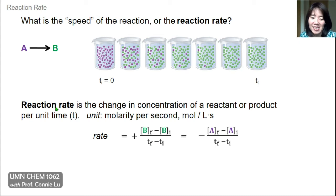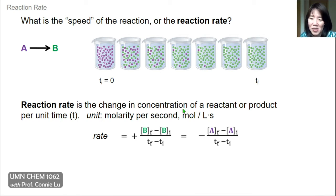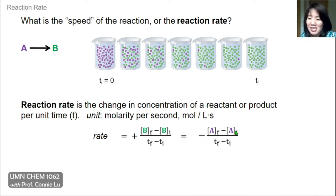Reaction rate is defined as the change in concentration of a reactant or product per unit time. Typically, chemical reactions are quite fast, so usually the unit time is seconds, and concentration has units of moles per liter. So the rate of this reaction can be written as the final concentration of product B minus its initial concentration over the total time — T final minus T initial. That's also equal to the negative of the change in concentration of A over all time, because A is disappearing.